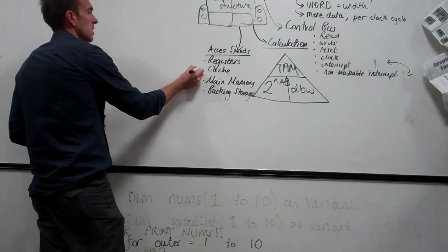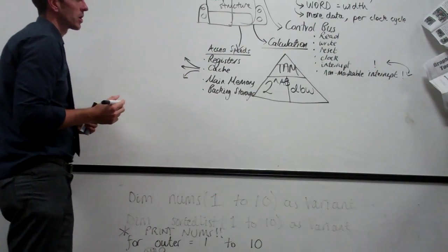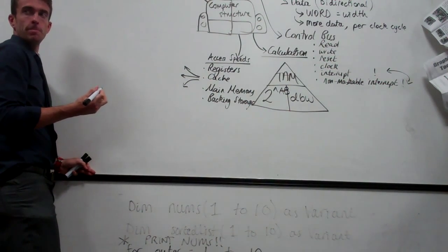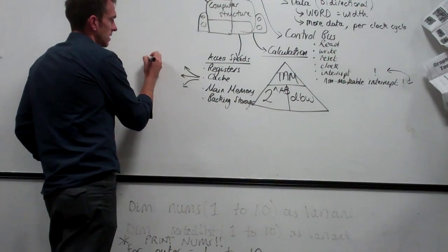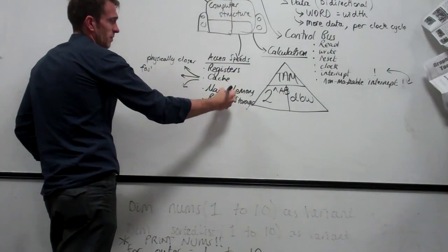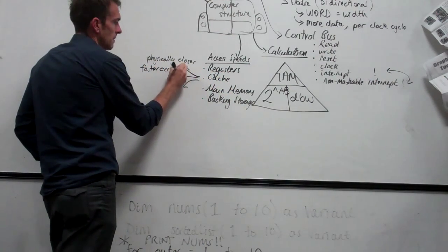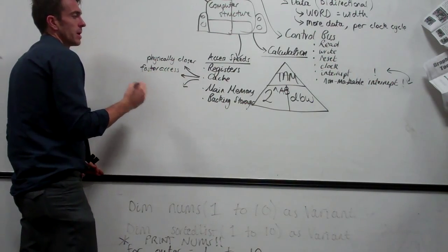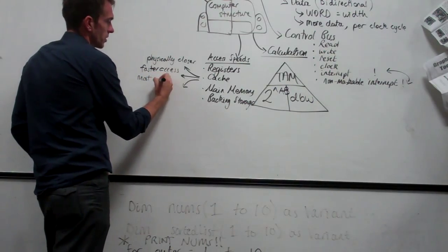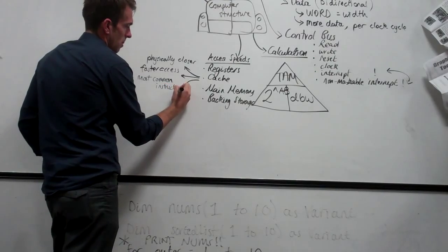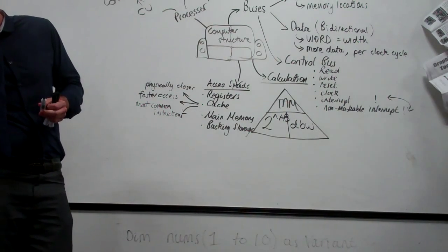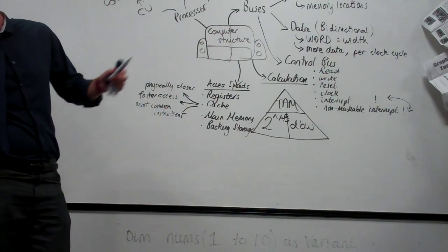We're going to get asked about cache because it improves the performance of a computer system. Where is it? Right in the processor — physically closer to the processor, so it's faster to access than main memory and backing storage. What has it got in it? The most commonly used instructions. There's probably a two-mark question on two reasons why cache improves performance. We've covered the calculation, access speeds, and addressability.